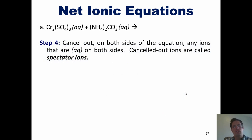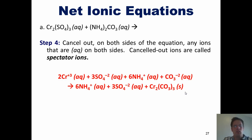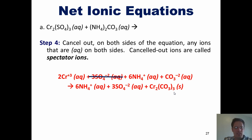Step four says we now cancel out on both sides of the equation any ions that are basically the same on both sides. Canceled out ions are called spectator ions. Looking at the left and right sides of the equation, the sulfate looks exactly the same on the left and the right, so we cross it out. The ammonium looks exactly the same on the left and the right, so we cross it out.